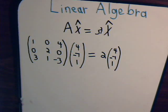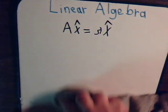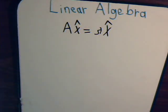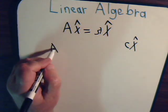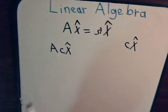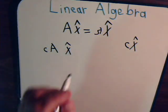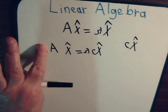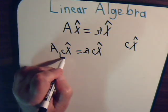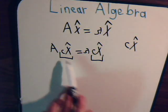Suppose we multiply our eigenvector by a constant C. Well, A times Cx — since C is just a constant, we can pull it out — equals C times A times x, which equals C times λx, which equals λ times Cx. So A times Cx equals λ times Cx. If you multiply an eigenvector by a constant number, you get a new eigenvector.